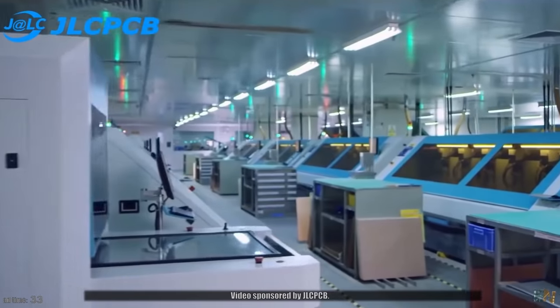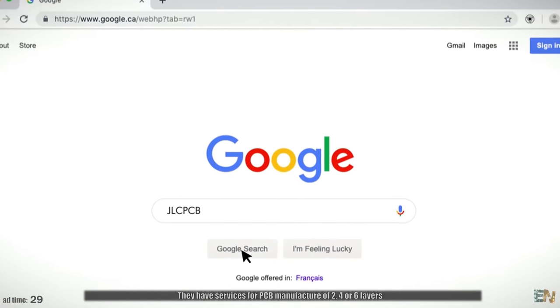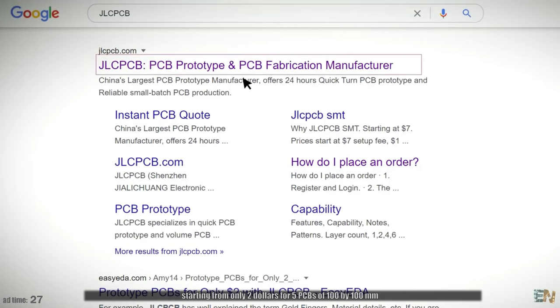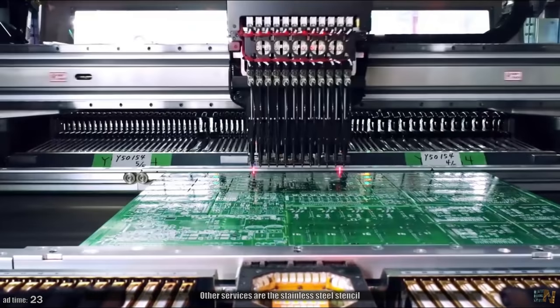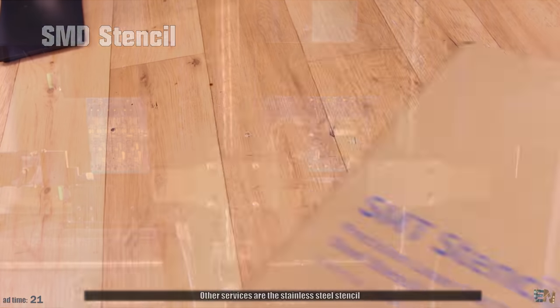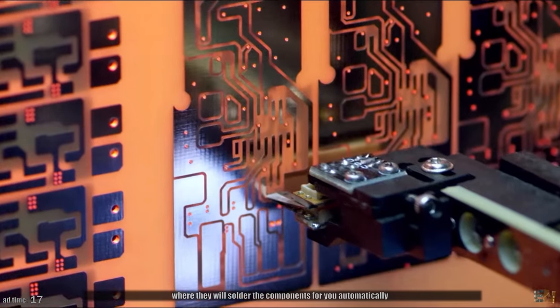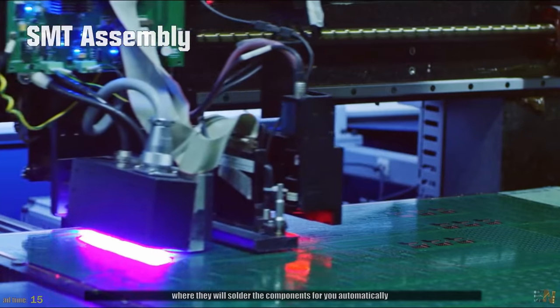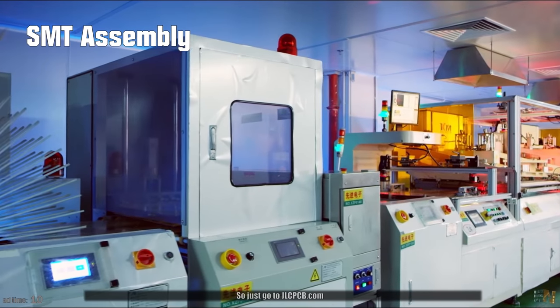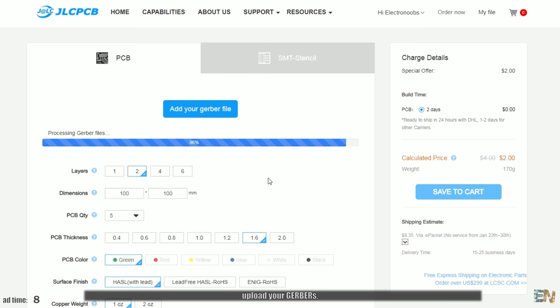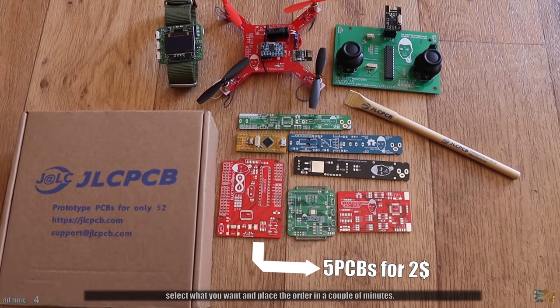Video sponsored by JLCPCB. They have services for PCB manufacture of 2, 4, or 6 layers, starting from only 2 dollars for 5 PCBs of 100 by 100 mm. Other services are the stainless steel stencil for soldering with solder paste and the SMT assembly where they will solder the components for you automatically using high technology machines for a professional finish. So just go to JLCPCB.com, upload the gerbers, select what you want and place the order in a couple of minutes.